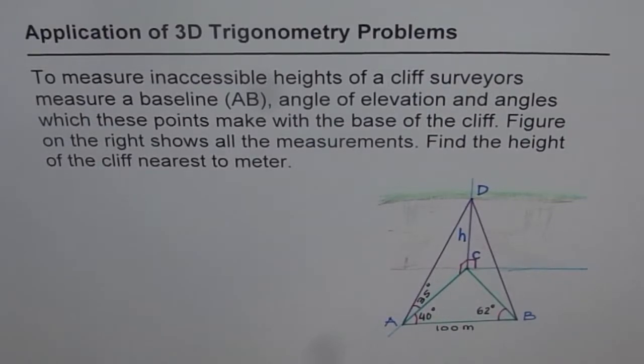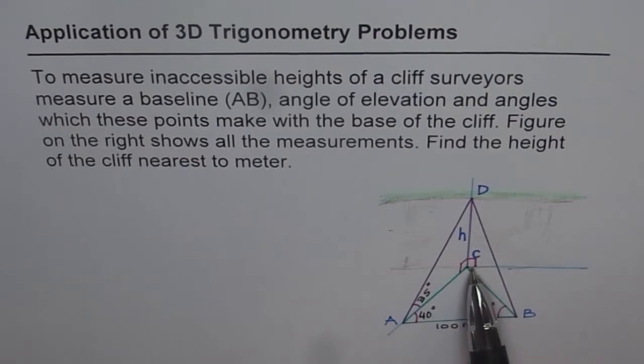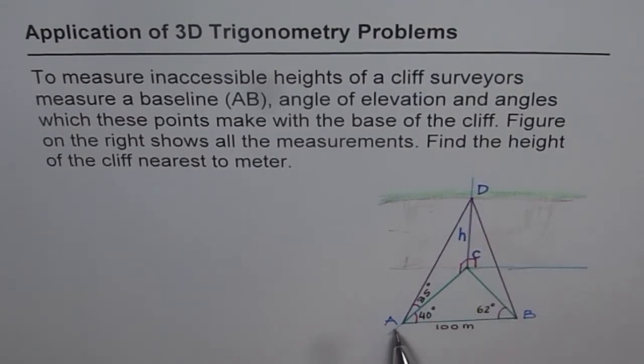Here we have an excellent application of solving 3D problems using trigonometry. This is how the height of most cliffs has been measured. We will refer to the diagram given here. This is a cliff whose height is CD and AB are the points on the ground. Now let's read the problem related with the figure and try to understand the situation.